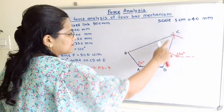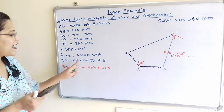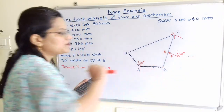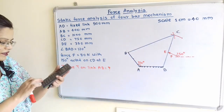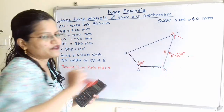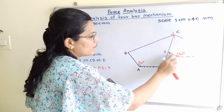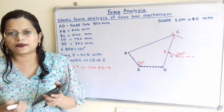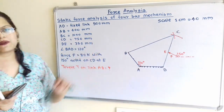Force F is 80 N at 150 degrees, acting on link CD at point E. The distance DE is 350 mm, so 350 divided by 40 equals 8.75 cm. We mark point E at 8.75 cm from D. At point E, we draw force F at 150 degrees to the horizontal. This completes the diagram drawn to scale, as we are solving by graphical method.